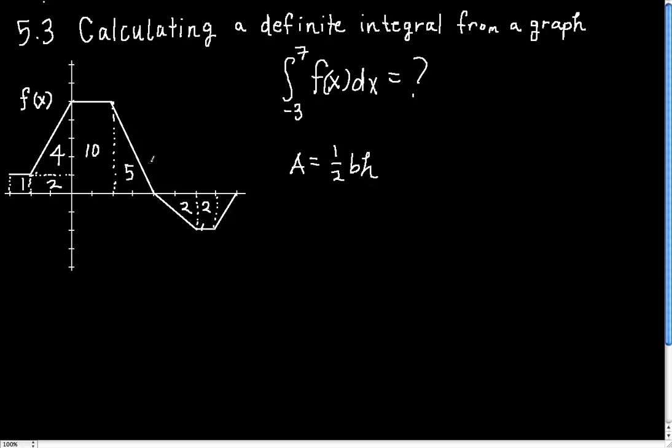Alright, so now I've calculated all the areas that I need, and I just need to figure out exactly what this integral is. Well, the integral counts all of the area above the x-axis as positive. So, I get 1 plus 2 plus 4 plus 10 plus 5. And I have to subtract off all the area that's below the x-axis. So, I have a 2 and a 2. So, 2 plus 2. That's 22 minus 4. And so, my answer is 18.